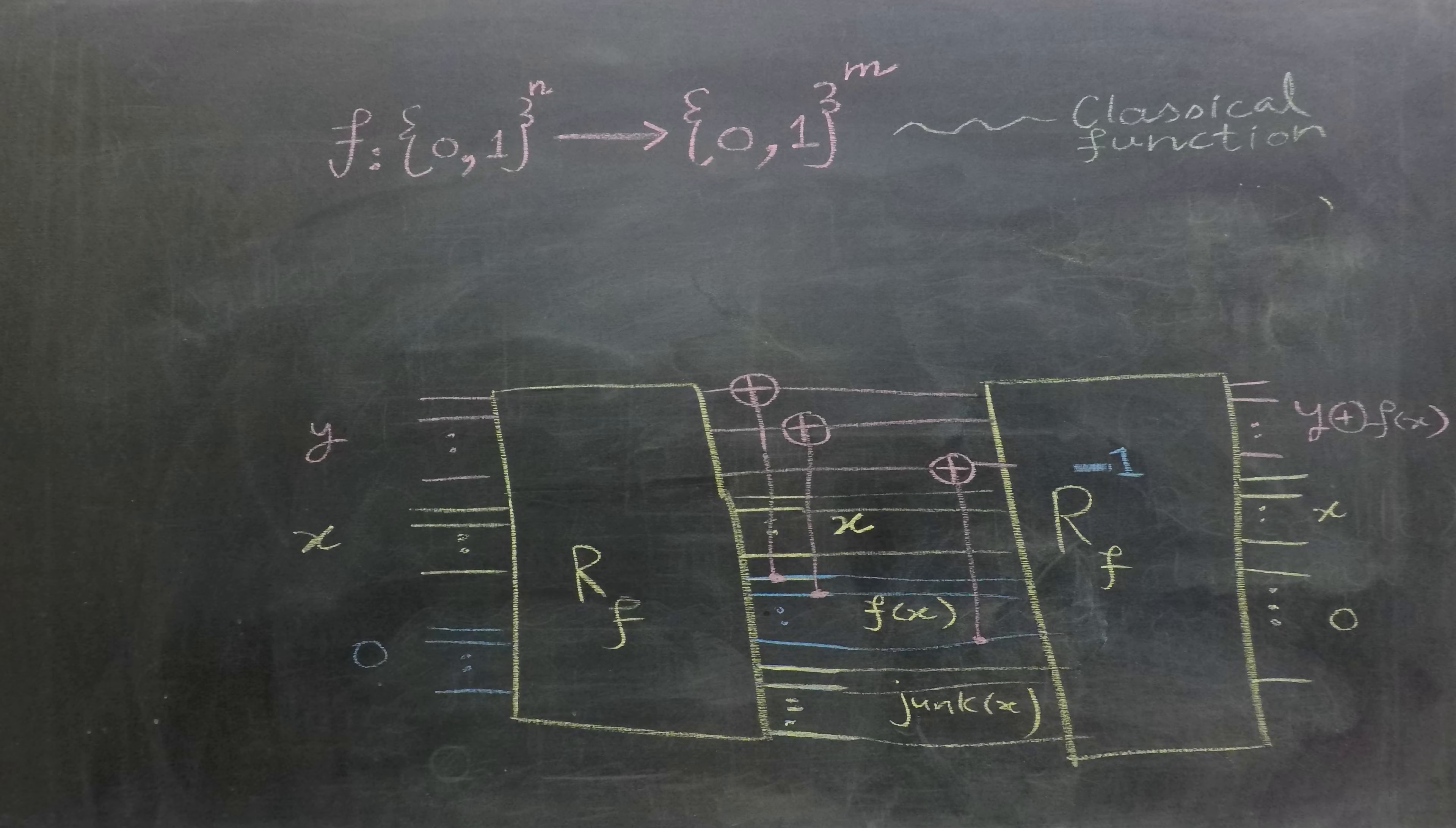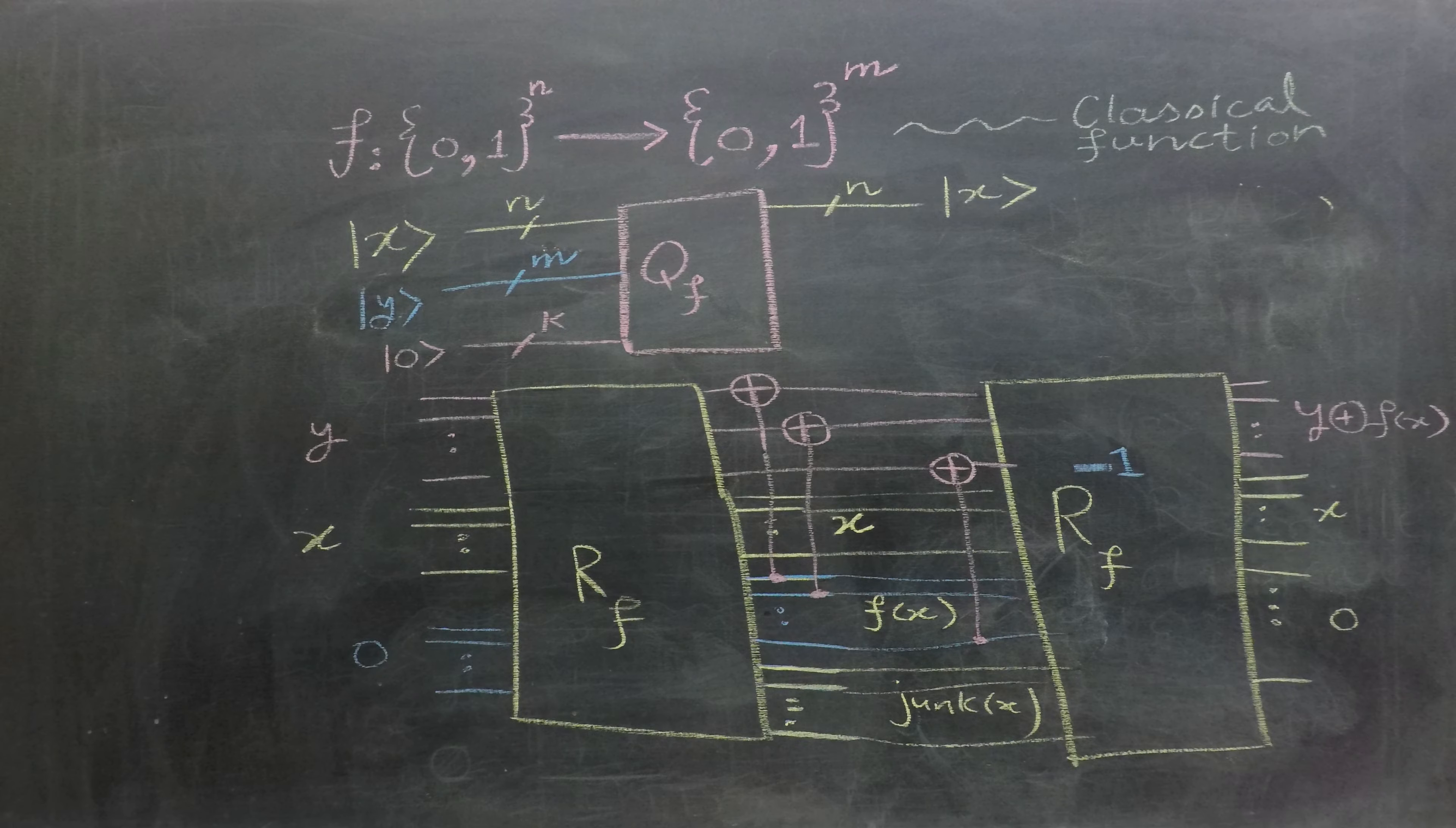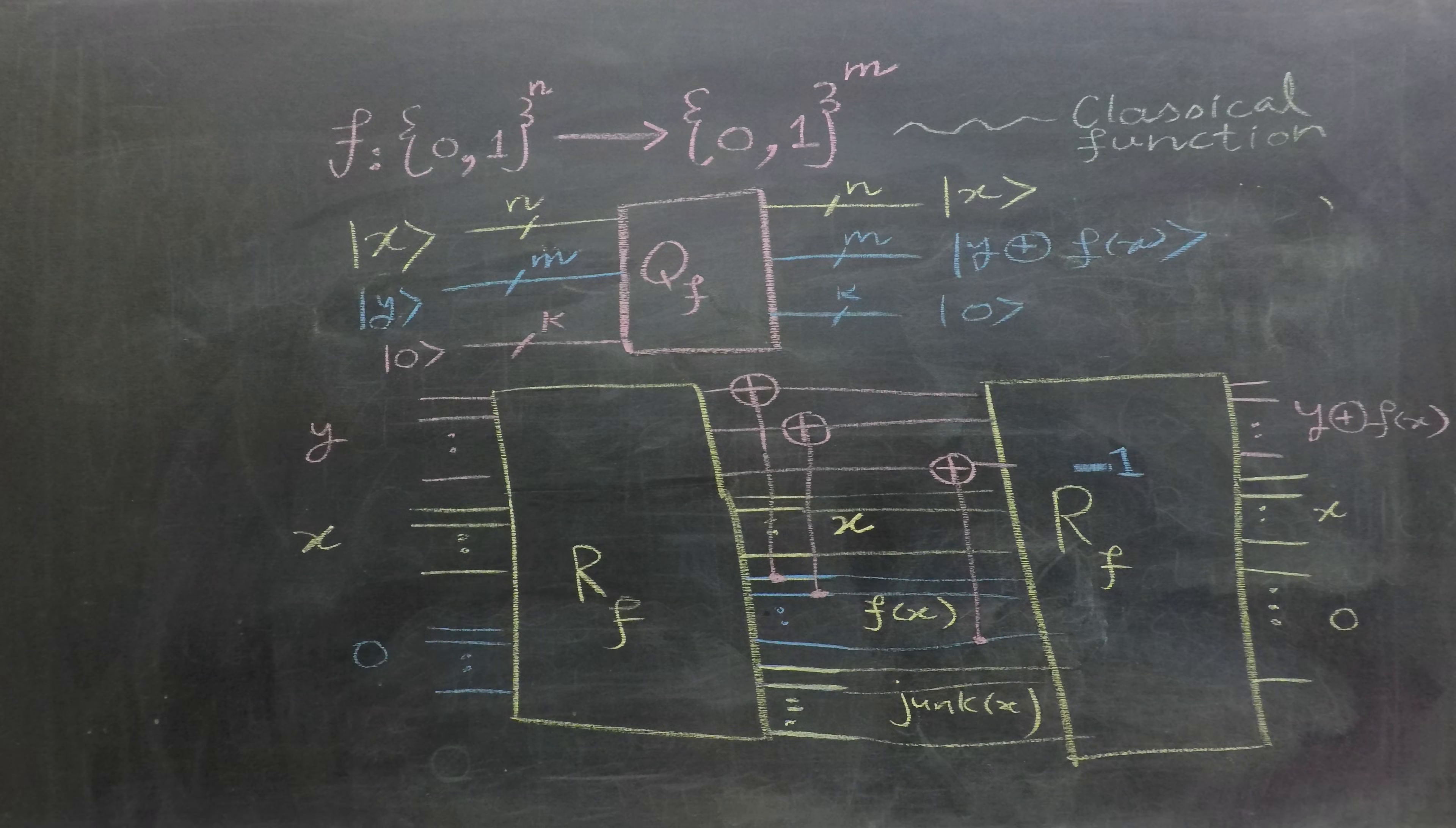It is safe to convert this classical circuit into quantum circuit for further processing. Now, our quantum circuit QF will take the following inputs: the input x and the input y. The resulting output for this quantum circuit will be ket x, ket of f of x XOR with y, and a series of zeros.